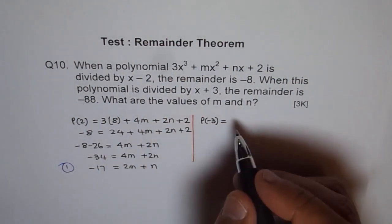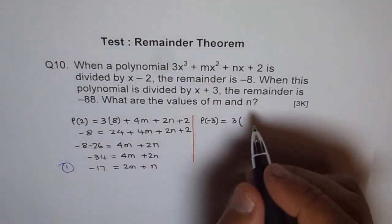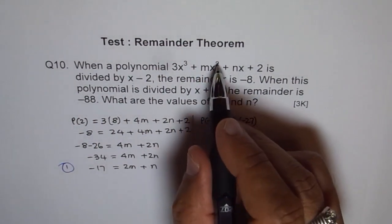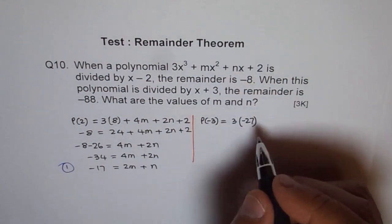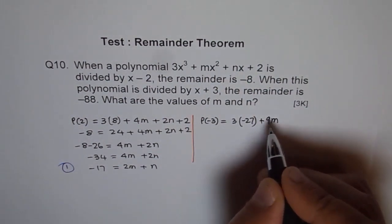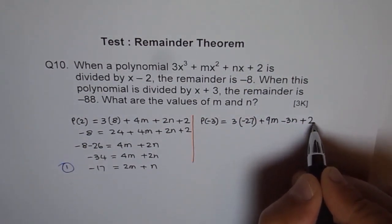So let's plug in -3 here. So we get 3 times (-3)³ is -27. And -3 will become square plus 9m. 3² is 9.